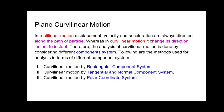Curvilinear motion can be described in three different component systems: the rectangular component system, the tangent and normal component system. In rectilinear motion, displacement, velocity, and acceleration were always directed along the path of the particle, whereas in curvilinear motion there is a change in direction at every instant. Therefore, the analysis of curvilinear motion is done in these three different component systems.